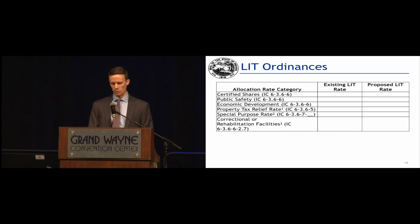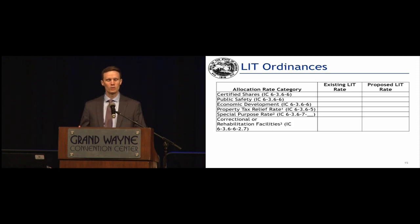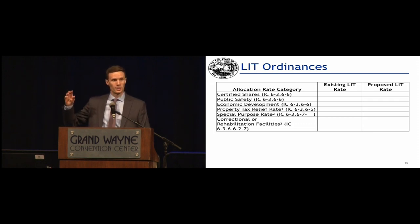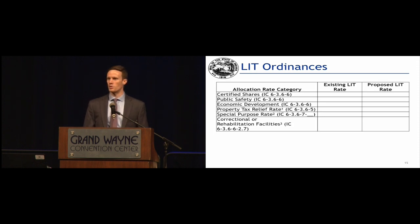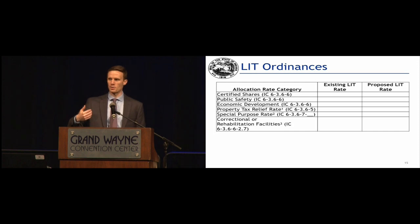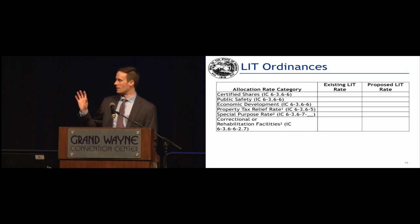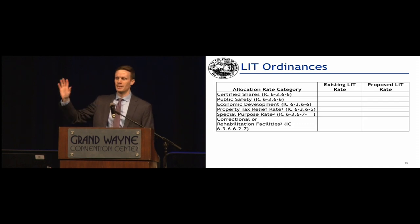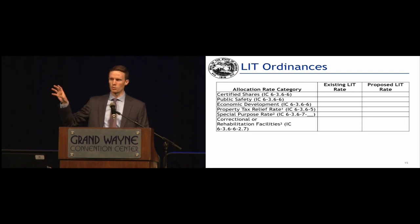The templates we have available are a notice of hearing on a proposed ordinance or resolution, and also uniform example ordinances and resolutions that can be used to modify LIT rates along with who the recipient of property tax relief is going to be. The ordinance is set up with the first three historic expenditure rate categories — certified shares, public safety, and economic development — and the newest one, correctional or rehabilitational facilities, as well as property tax relief and special purpose. The format asks the adopting body to list the current rates in the column on the left and the proposed new rate in the column on the right, making crystal clear what the adopting body's intent is.